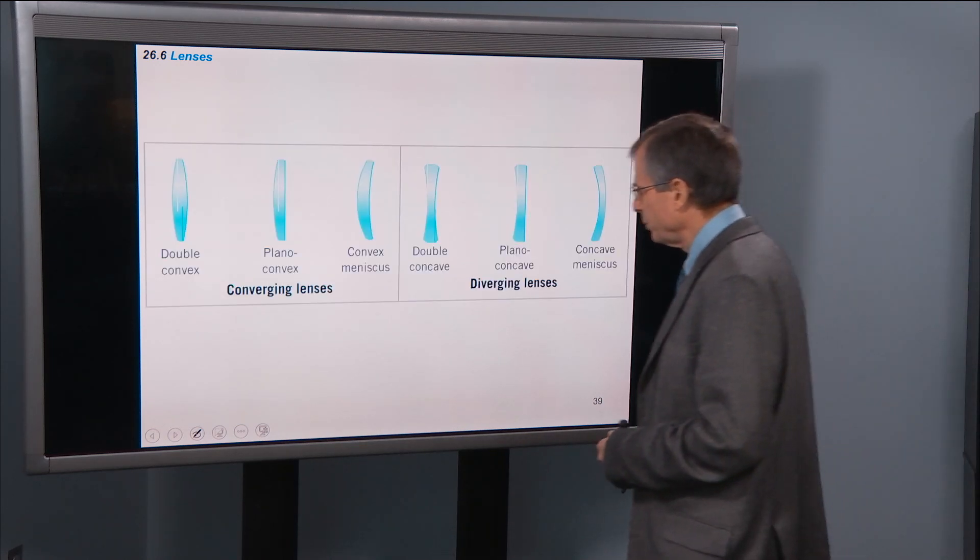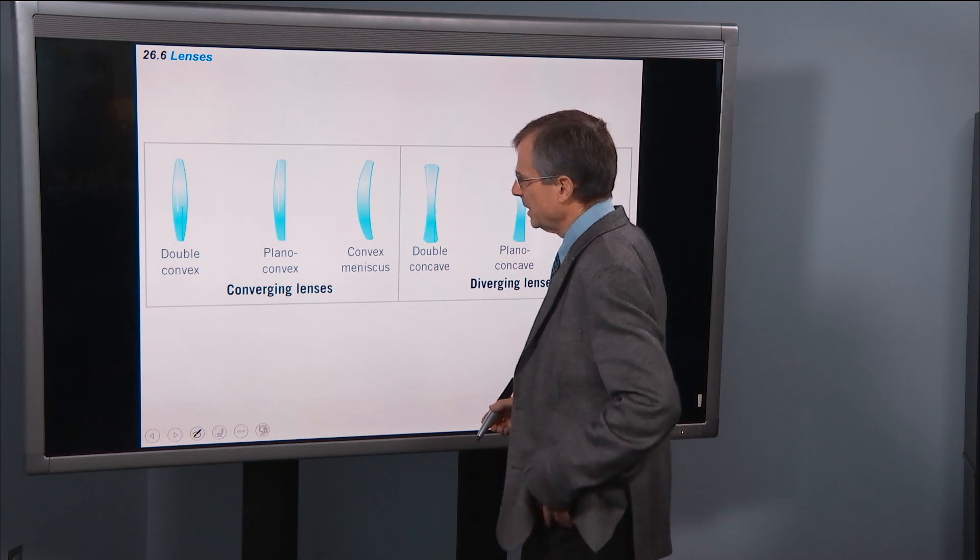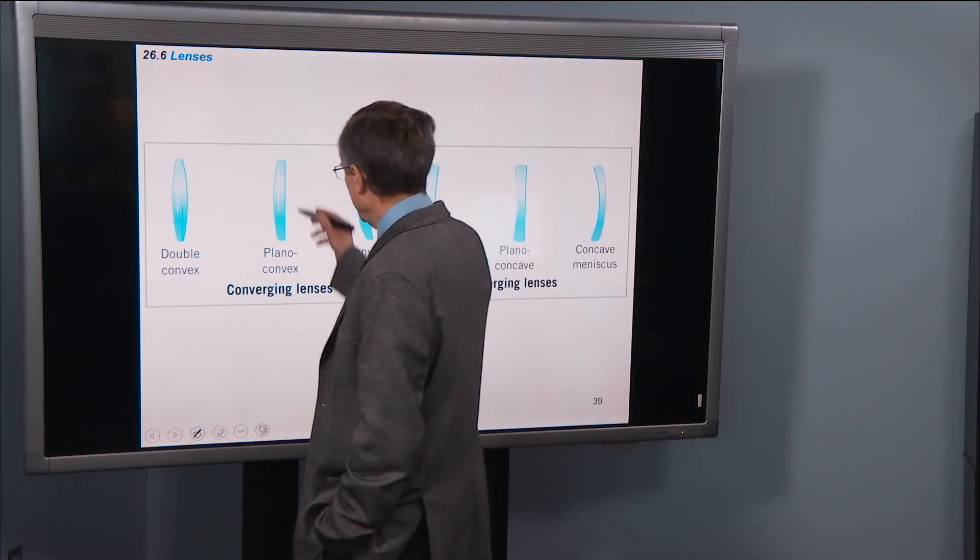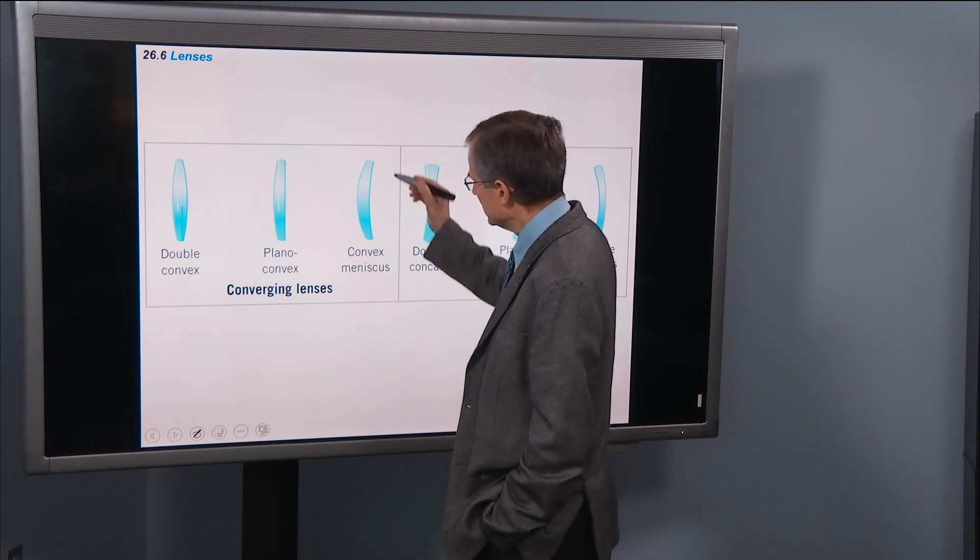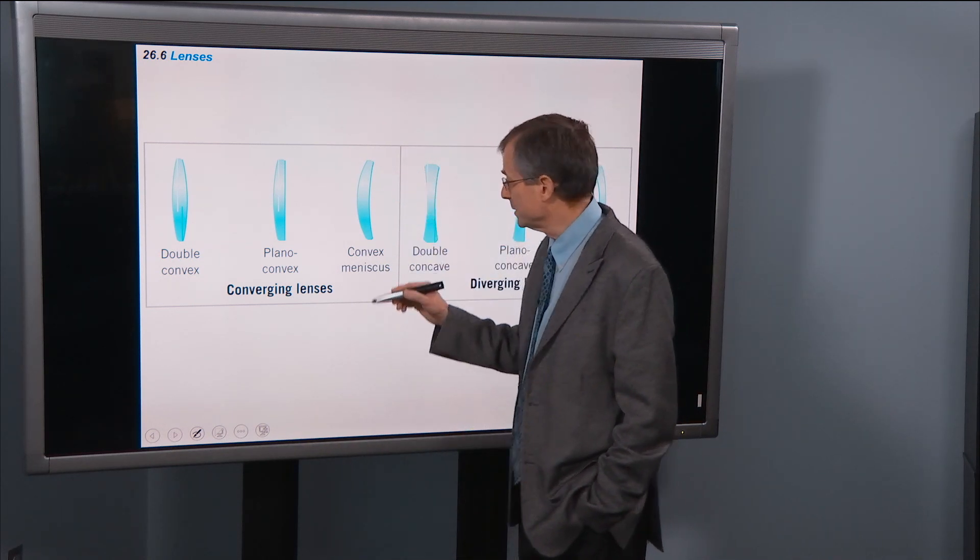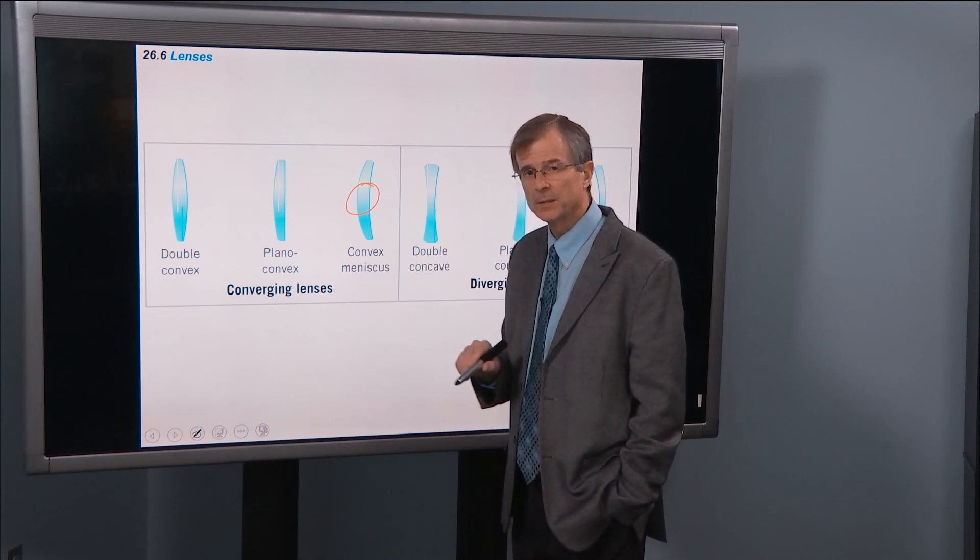So here are some examples of converging lenses: double-convex, plano-convex, plane on one side and convex on the other side. Convex and concave on both sides, but still bulging in the middle so still a converging lens.